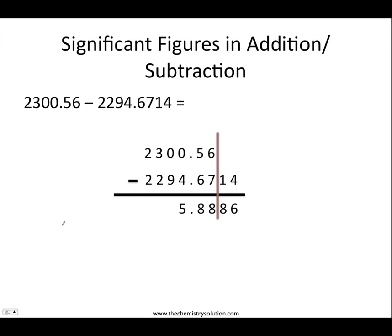It works the same way for subtraction. When we subtract 2294.6714 from 2300.56, we line up our values and draw a line after the number with the least number of decimal places. This makes it easy to see that we will only be keeping three significant figures. Because 2300.56 has two values to the right of the decimal point, we can only have two values to the right of the decimal point in our final answer. Although 2300.56 has six significant figures and 2294.6714 has eight, we will only keep three significant figures, giving us a final answer of 5.89.